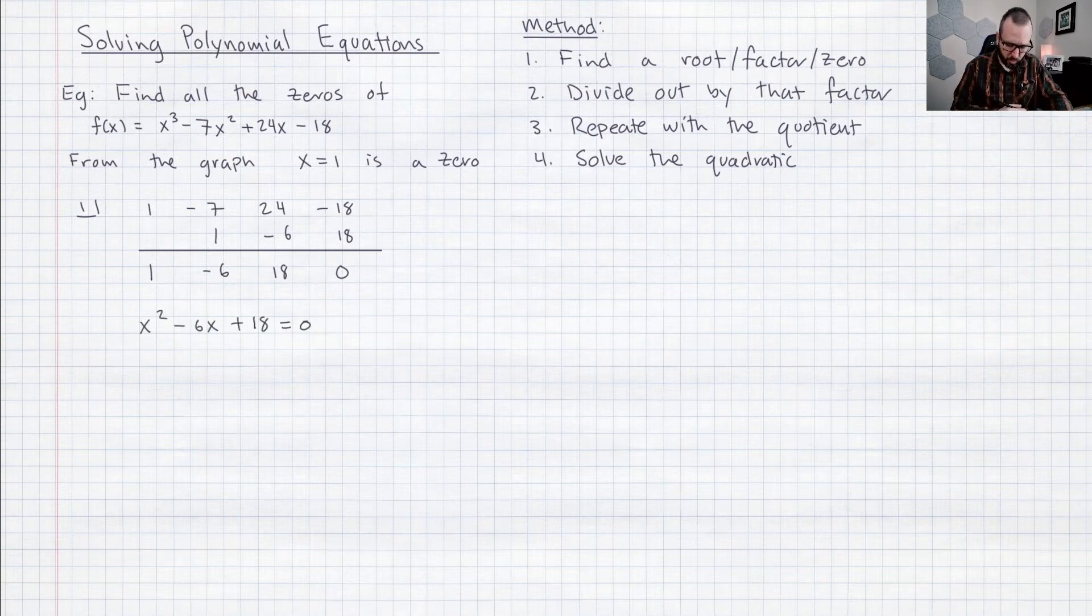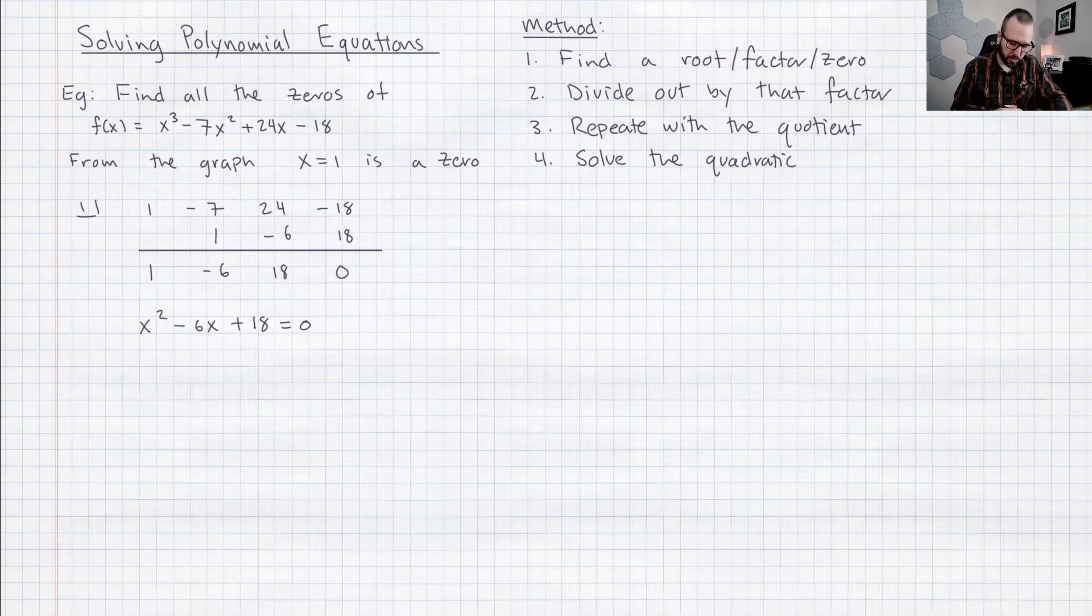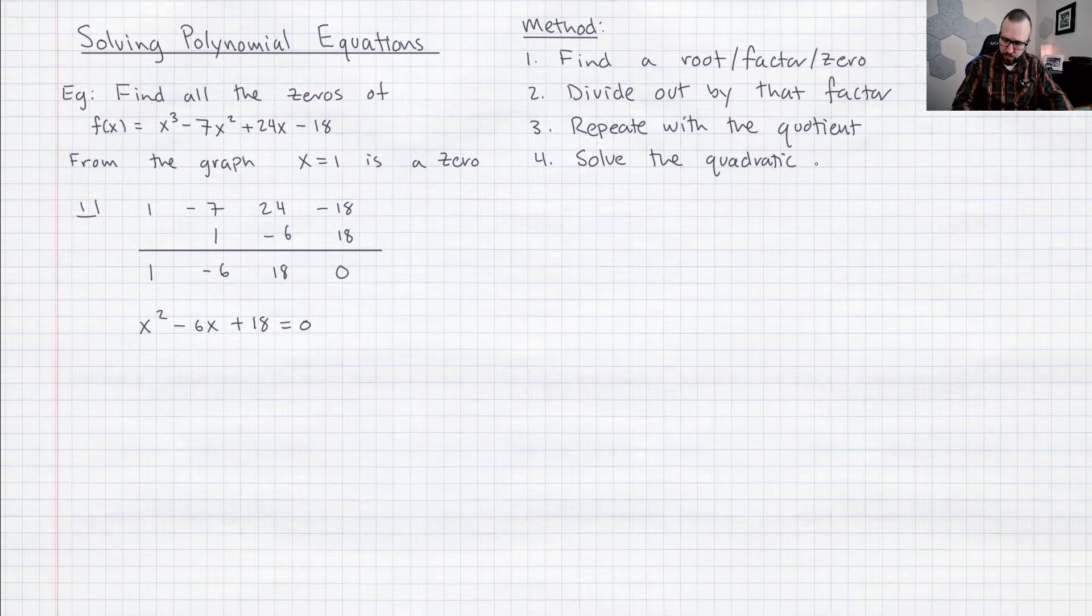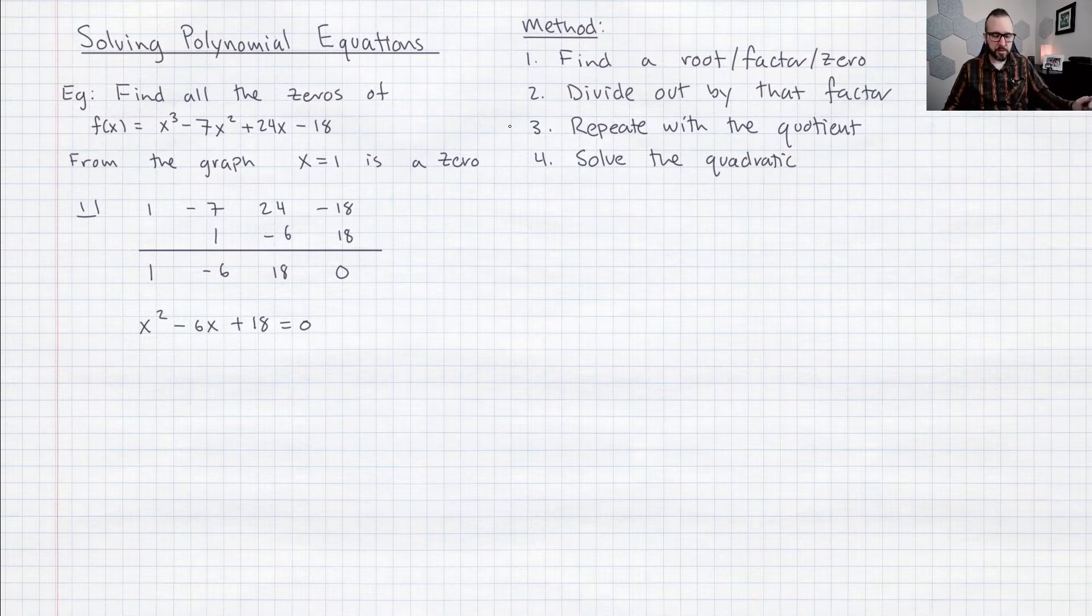So I've taken this quotient that we got from our long division and I turned that back into a polynomial and that just gave me a simple quadratic equation. So we've already made it down to this last little step right here where we have to solve the quadratic. So I'm just going to use the quadratic formula and that'll just spit out an answer.